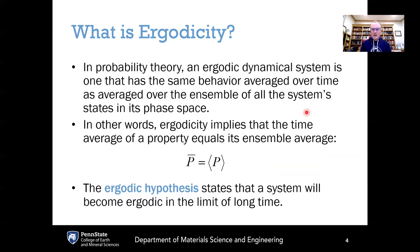This observer-dependence is key to the notion of ergodicity. The word ergodic or ergodicity was originally proposed by Boltzmann. In probability theory, an ergodic dynamical system is one that has the same behavior averaged over time as averaged over the ensemble of all system states in phase space. In other words, ergodicity implies that the time average of a property is equal to its ensemble average, as shown mathematically. A time average is denoted with an overbar and the ensemble average with angle brackets.